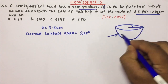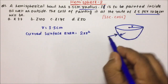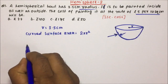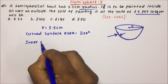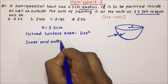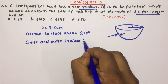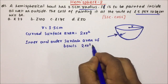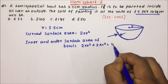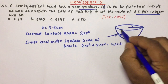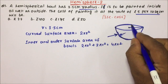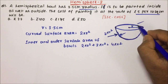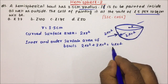The curved surface area of a hemisphere is 2πr². Now, painting has to be done from inside and outside, so the total inner and outer surface area of the bowl will be equal to 2πr² plus 2πr², which is nothing but 4πr². One 2πr² is for the outside and another 2πr² for the inside.